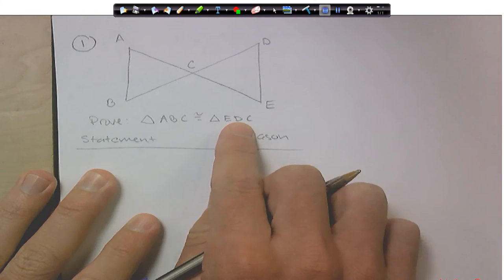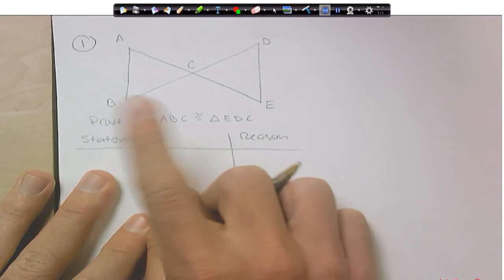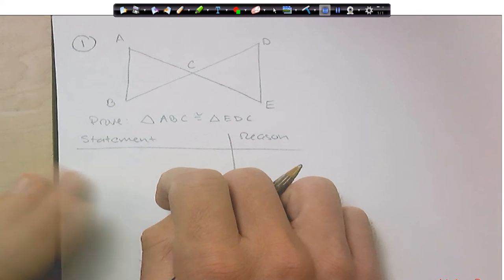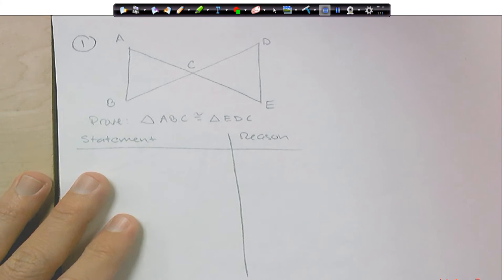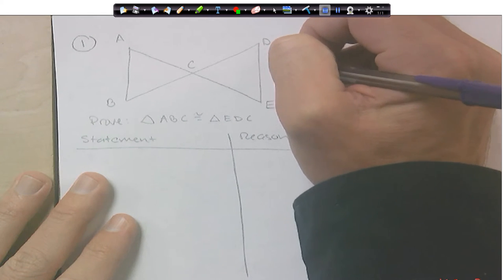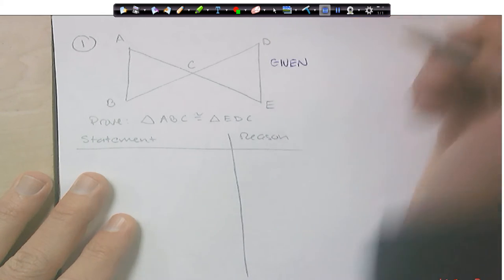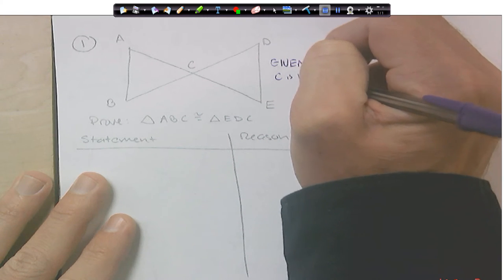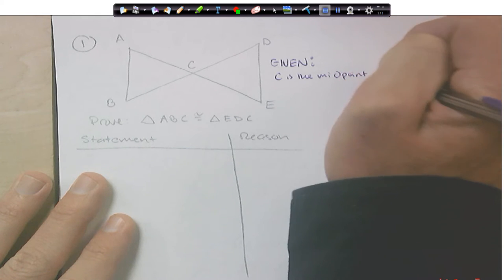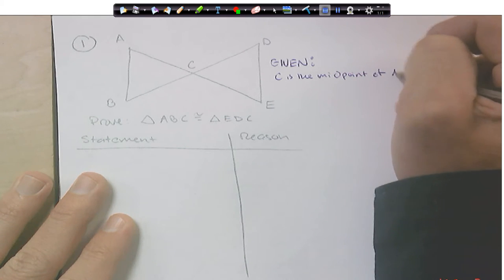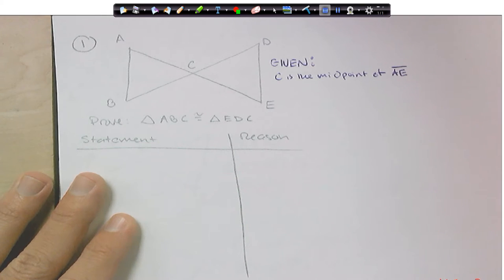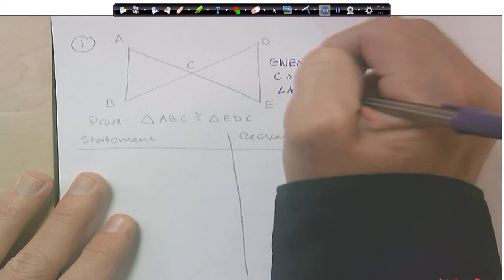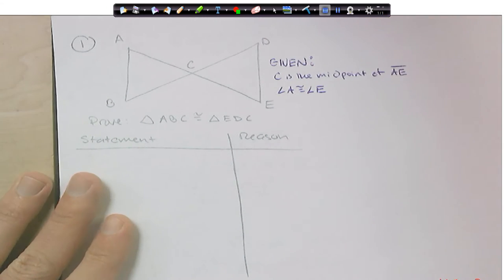So we're going to prove that these two triangles are congruent. We're looking at the bow tie picture, and whenever we look at the bow tie picture, we know there's one thing for sure that we can prove. But first of all, we need to know kind of what we have here. So the first thing is we're going to go ahead and do the given. And the given for us in this is that C is the midpoint of AE. And then we're going to also be given angle A is congruent to angle E.